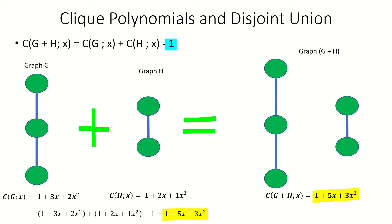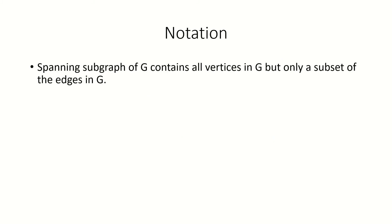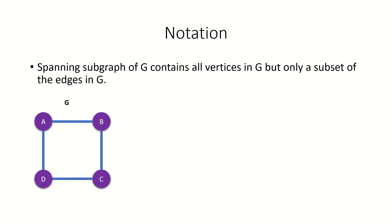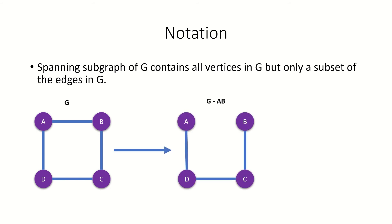Now let's cover two important equations involving clique polynomials. In order to understand these equations, we'll need some new notation, first for subgraphs. A spanning subgraph of g is some subgraph of g that contains all of the vertices in g, but does not necessarily contain all of the edges. That is, to form a spanning subgraph, we remove some edges from our graph, but we do not remove any vertices. On the right, you can see a spanning subgraph of g, which is just the original graph minus an edge ab. Note that we express this subgraph as g minus ab.